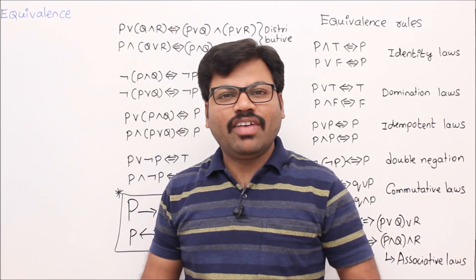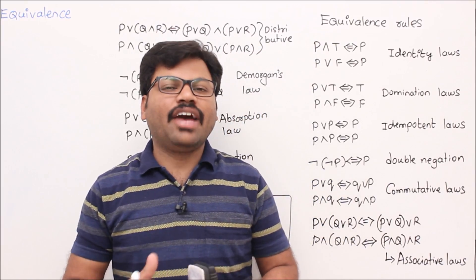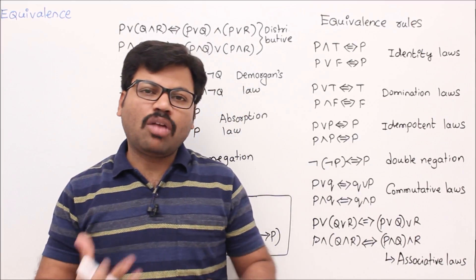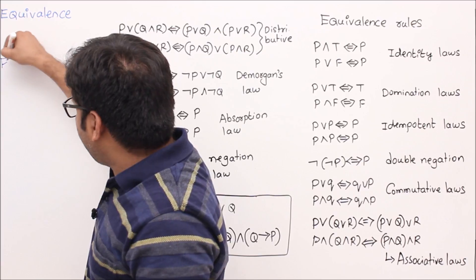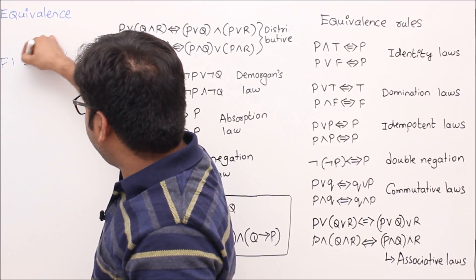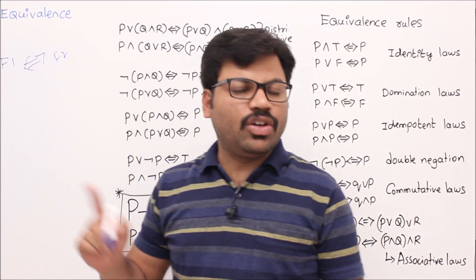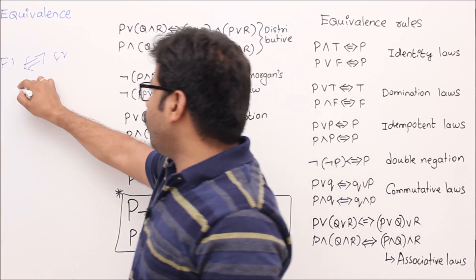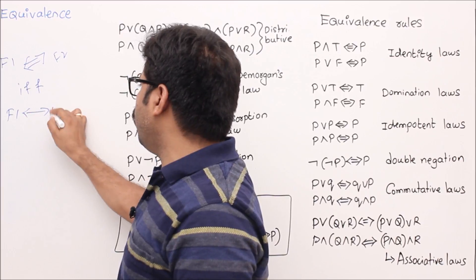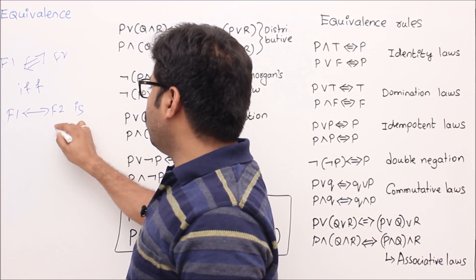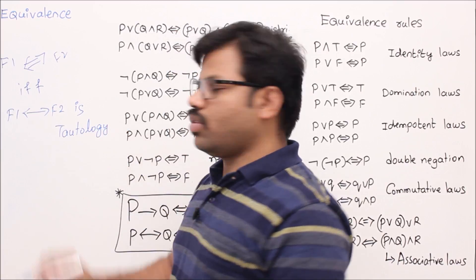Let's see equivalence. Whenever I say two formulas are equivalent, that means they have the same behaviors. We'll see a formal definition of equivalence. I write it like this: there are two formulas f1 and f2, and f1 is equivalent to f2 if and only if f1 double implication f2 is a tautology. A tautology is a formula which is always true.